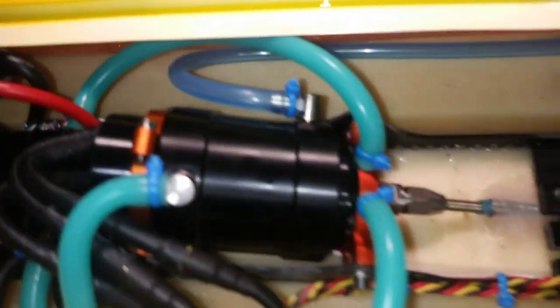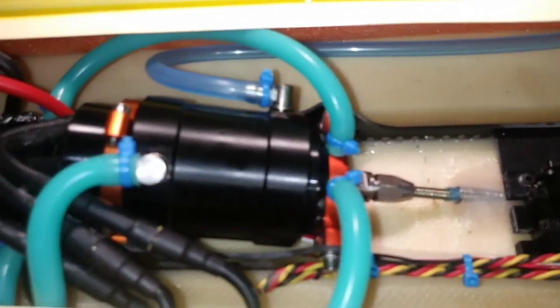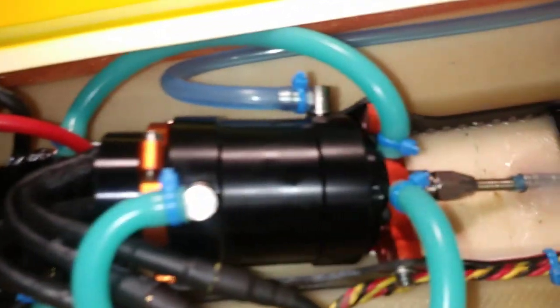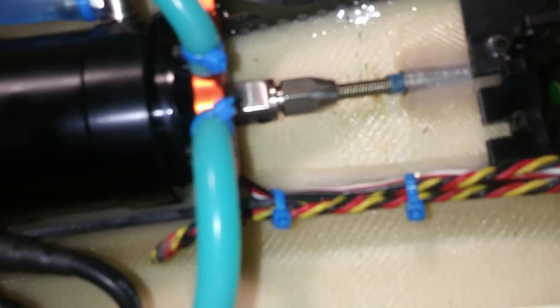But yeah, I can't wait. If you guys are wondering how I run my water lines, I run it into the bottom of the motor first, out of the top of the motor into the speed controller, back out of the speed controller into the motor mount, back out the motor mount, and then back out the boat.